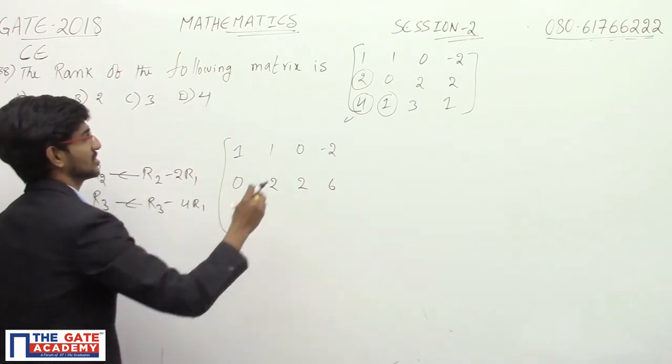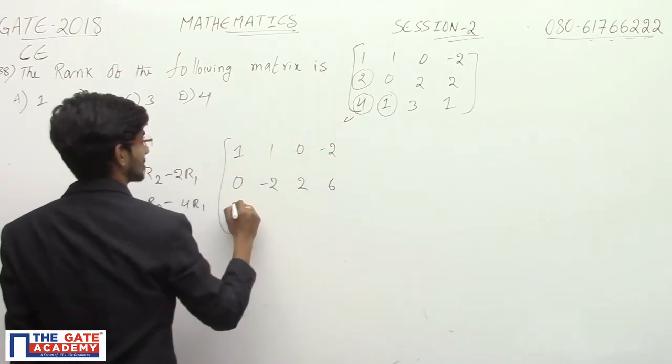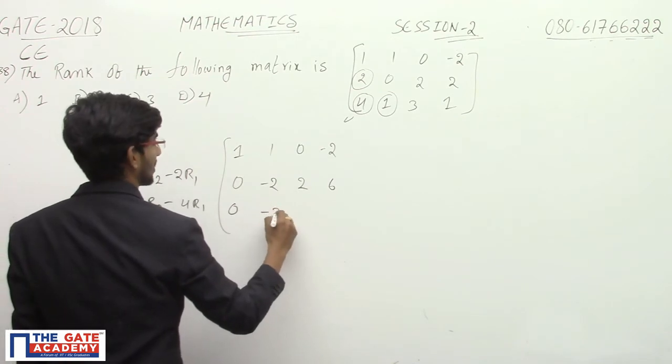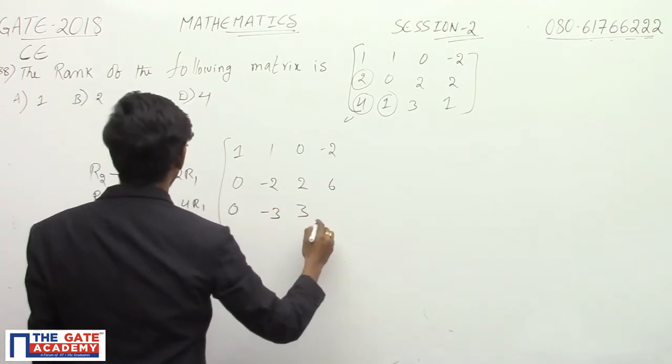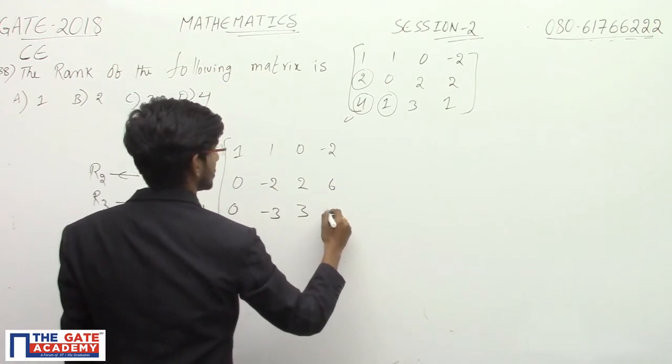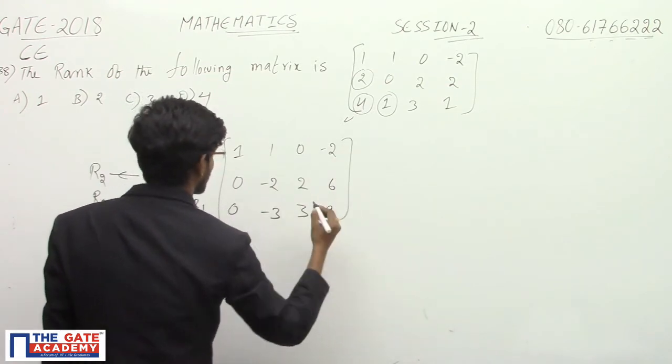And this becomes 4 minus 4 equals 0, 1 minus 4 equals -3, 3, and 1 plus 8 equals 9.